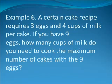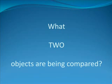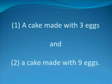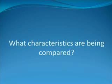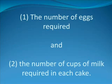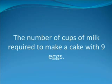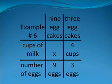Example six. A certain cake recipe requires three eggs and four cups of milk per cake. If you have nine eggs, how many cups of milk do you need to cook the maximum number of cakes with the nine eggs? What objects are being compared? A cake made with three eggs and a cake made with nine eggs. What characteristics are being compared? The number of eggs required and the number of cups of milk required in each cake. What is the unknown? The number of cups of milk required to make a cake with nine eggs.